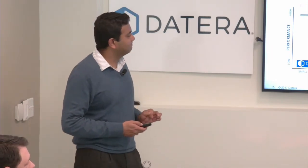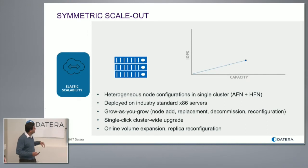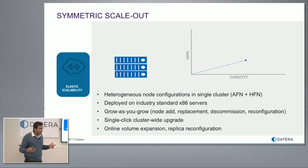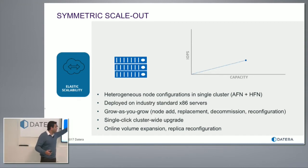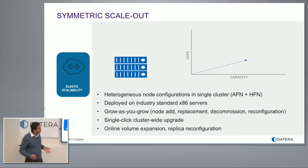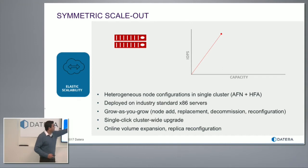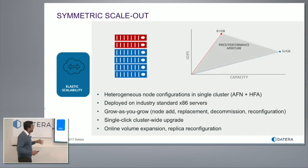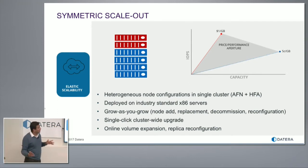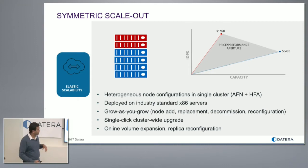The system supports a heterogeneous configuration — mix and match of all-flash and hybrid nodes. If you want capacity, you get hybrid nodes; if you want a different performance profile, you add flash nodes; or you can combine them for a wide aperture of price-performance options. This is important because you don't know what applications you'll onboard in a cloud environment and you need to offer multiple service levels. You can add nodes, decommission nodes, and reconfigure nodes online. If a new faster media type shows up, it just gives you a wider price-performance ratio.